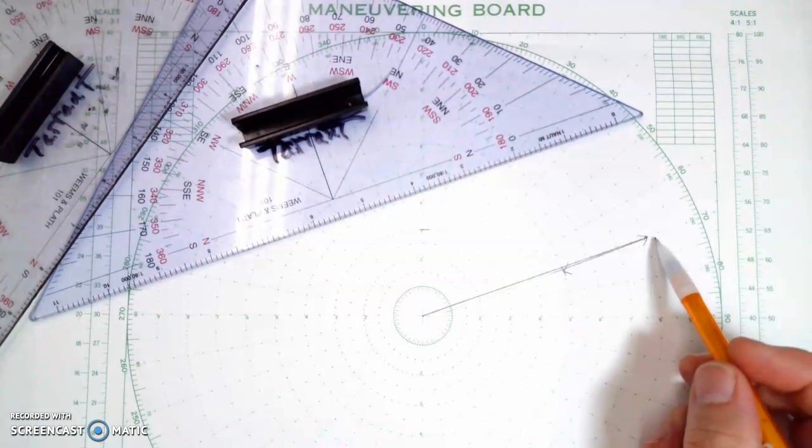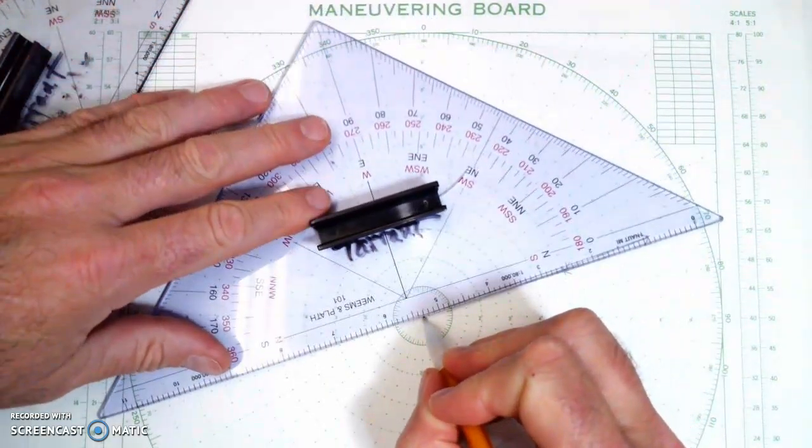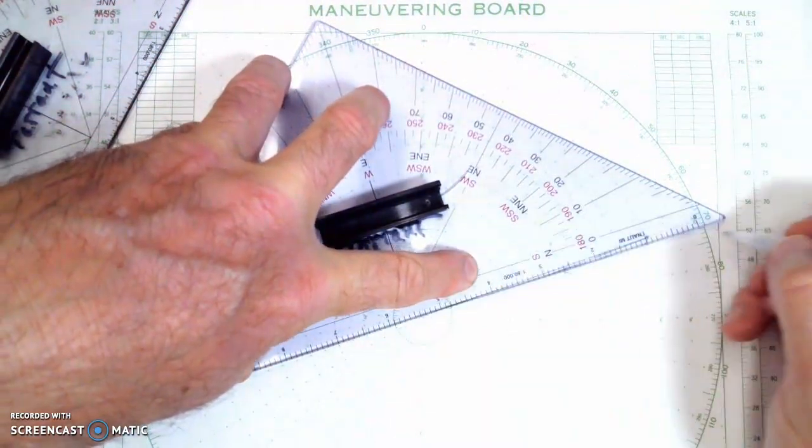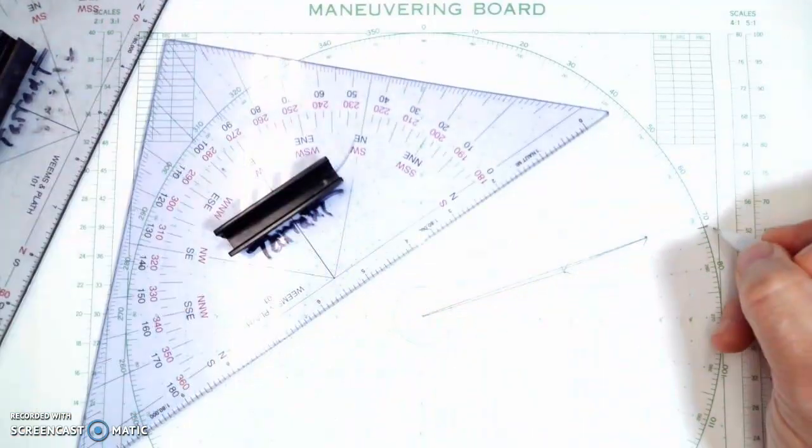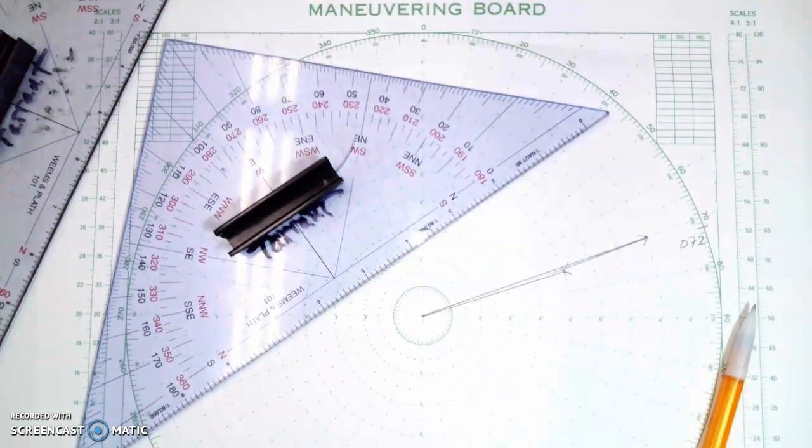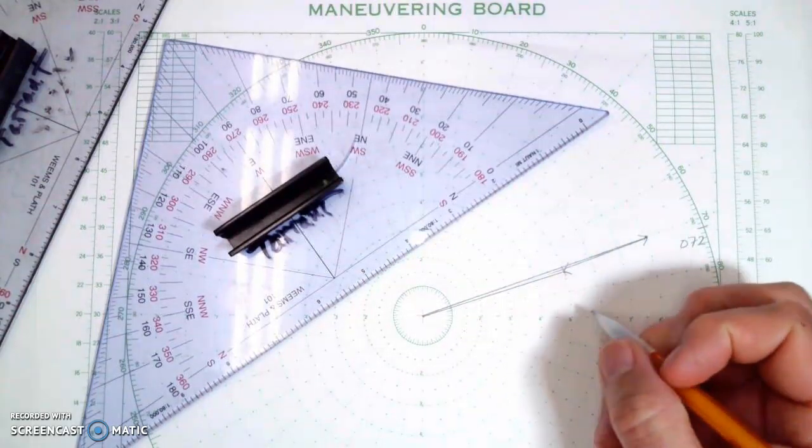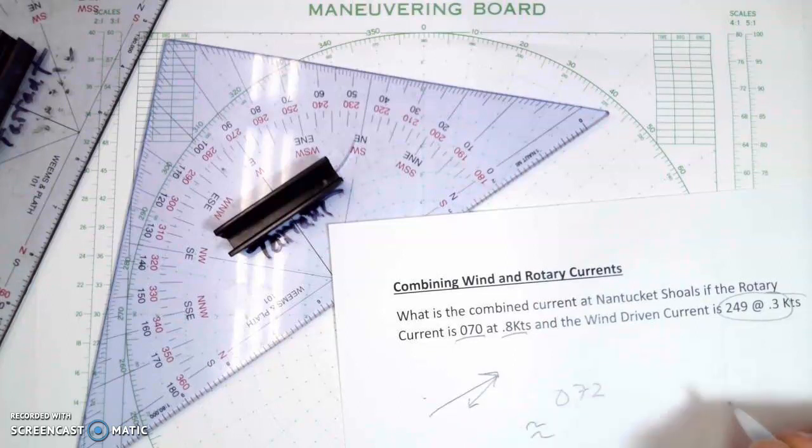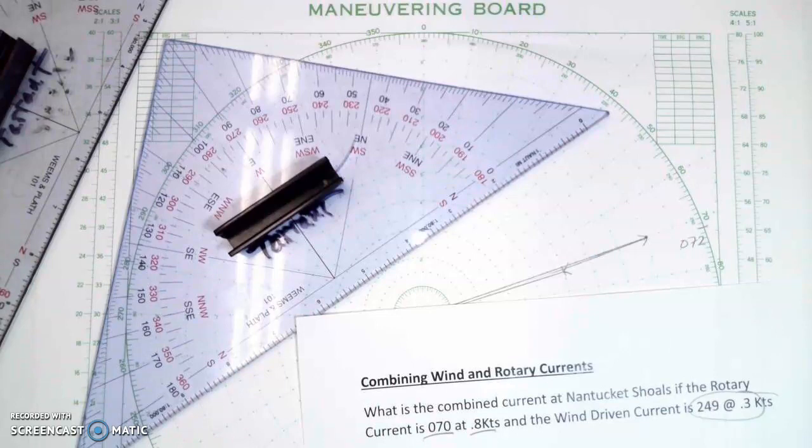So what's my resultant? Well, most of it's in that direction, a little bit back this way. So my resultant is going to be from here to there. And that direction to me looks to be about, so if I go like this, that'd be my resultant current. And that looks to me to be about 70, 71, 72, 072. And the velocity is 0.1, 0.2, 0.3, 0.4, 0.5. So it looks to me like my resultant is going to be 072 at approximately 0.5 knots. And that is the answer to that problem.